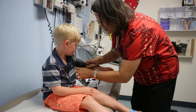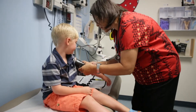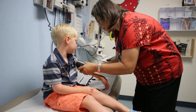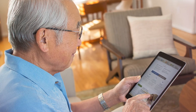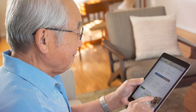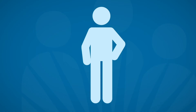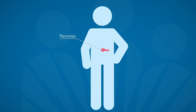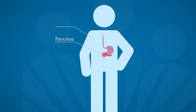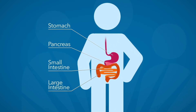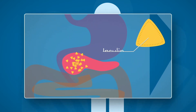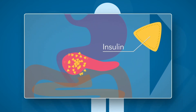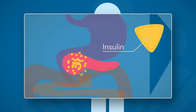Type 1 diabetes was previously known as juvenile diabetes. However, it can occur at any age. This type of diabetes is autoimmune in nature. The person's own body has attacked its pancreas, resulting in little to no insulin production. Therefore, a person with type 1 diabetes requires insulin by injection or insulin pump.